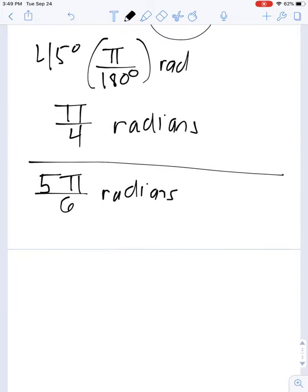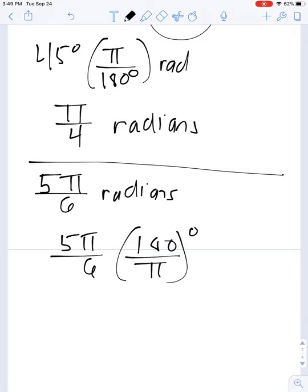Well, in degrees, I'm going to take my 5π over 6. I'm going to multiply it by 180 over π. The π's cancel out. And so, 180 over 6 is 30. 30 times 5 is 150. So this turns into 150 degrees.